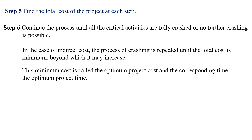In the case of direct cost, the process of crashing is repeated until the total cost is minimum, beyond which it may increase. This minimum cost is called the optimum project cost and the corresponding time is called the optimum project time. This is the procedure for the crashing of a project.